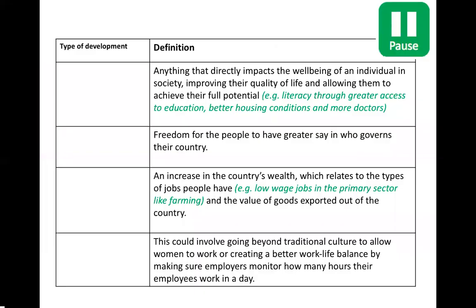Pause the video and identify which definition links to which type of development. The four types are cultural development, social development, economic development, and political development. I'll read through the definitions: the first one — anything that directly impacts the well-being of an individual in society, improving their quality of life and allowing them to achieve their full potential, for example literacy through greater access to education.